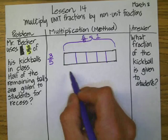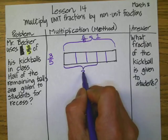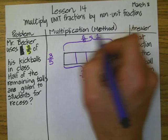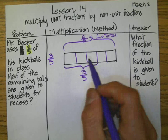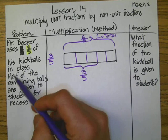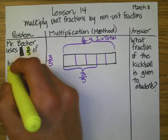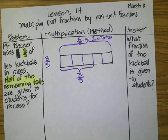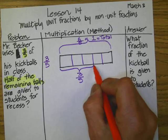So three-fifths will be one, two, and three. Let's label that — that will be three-fifths. And remember, it's the total balls. Now, this statement says half of the remaining balls. So what we have remaining is this part right here. And it says only half of the remaining.